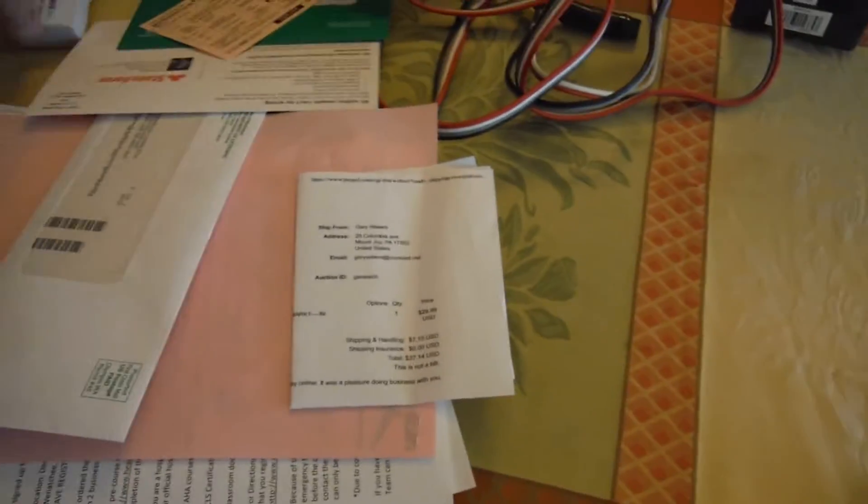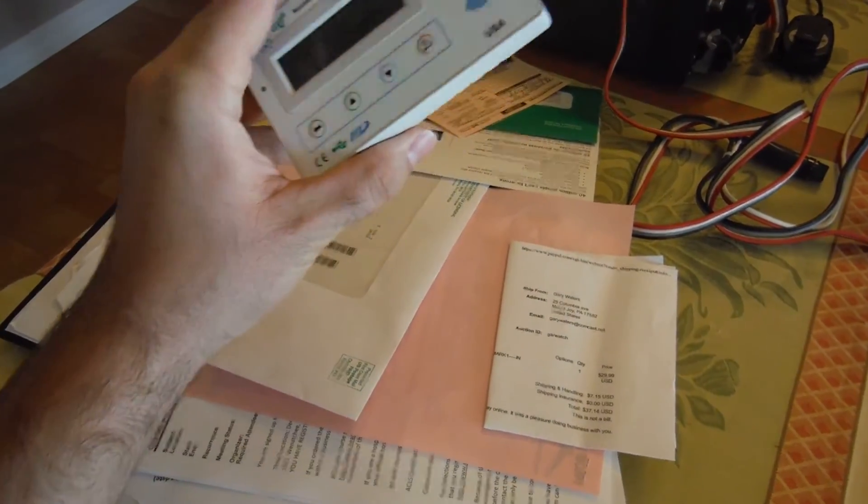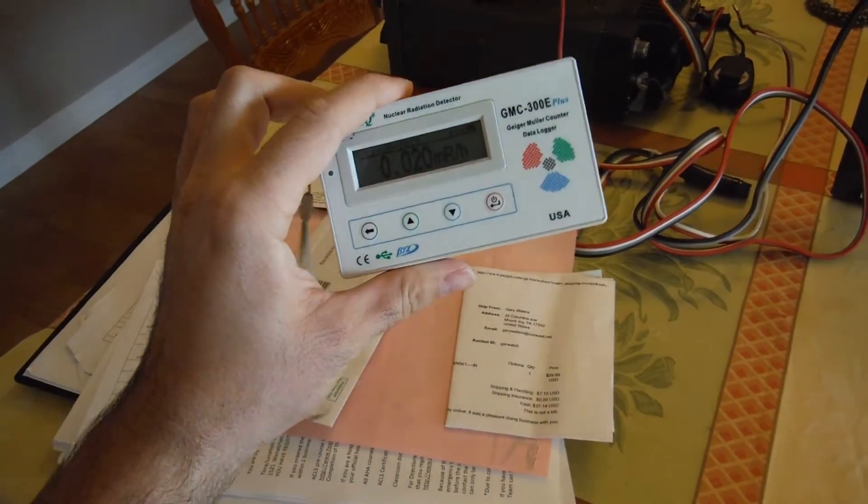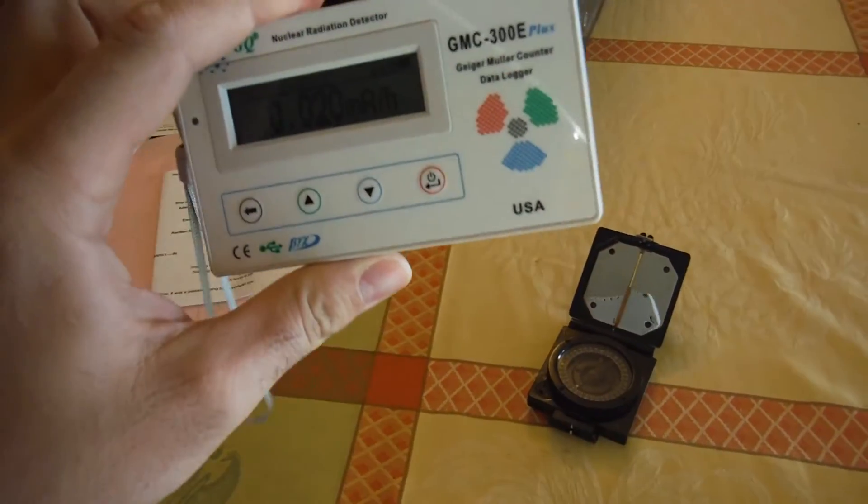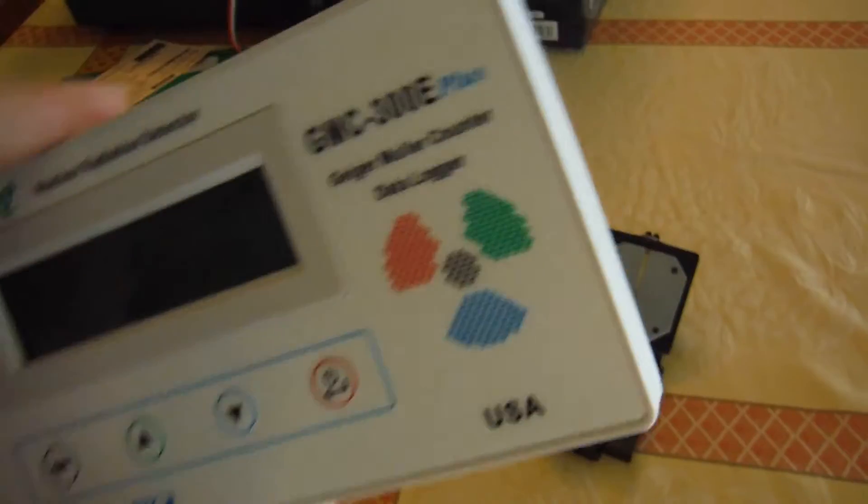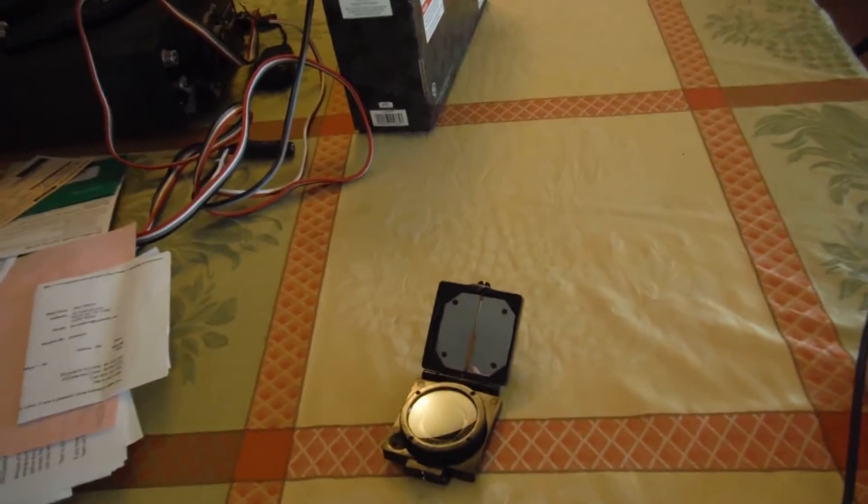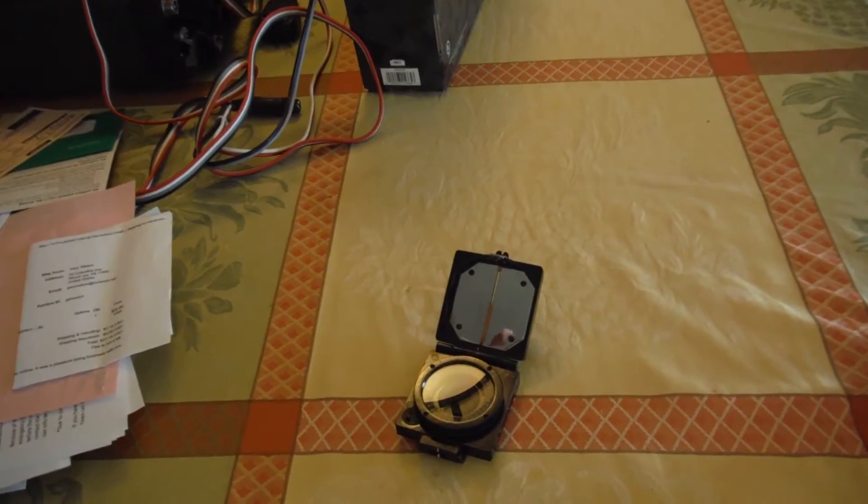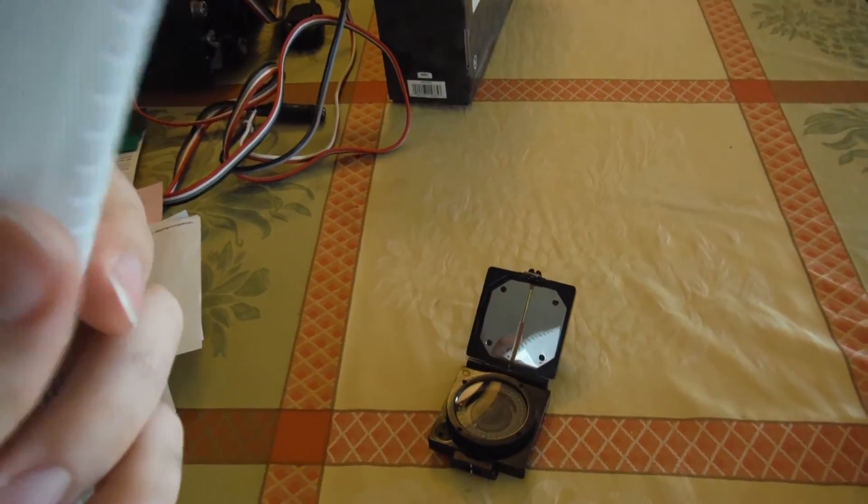So we're gonna check this out with the gamma counter here. The GQ, oh wow, it's starting to go off the scale already and I'm not even close to it. This is backed by right about where my head is and I'm still getting a count of half a milliroentgen per hour. Alright, here we go.